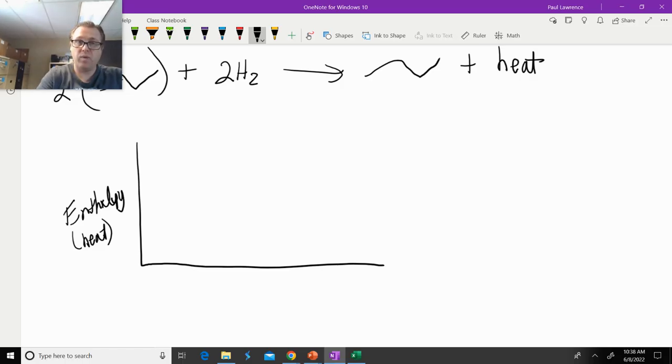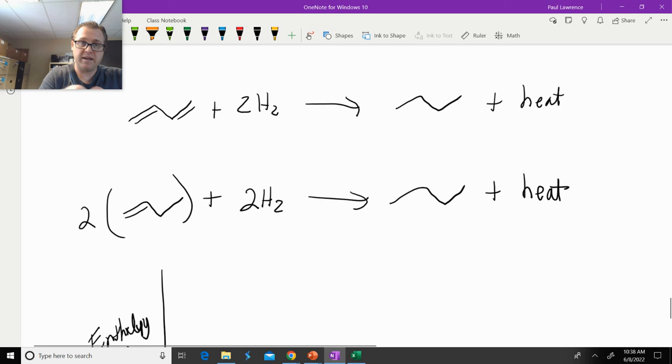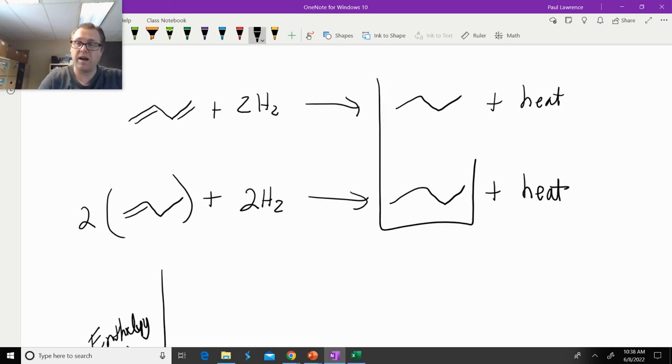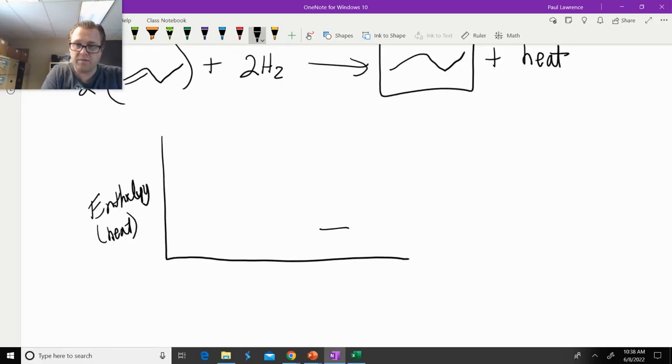And what we can see is between the two possibilities, the diene and the alkene, we both come to the same product. So I'm going to represent the product with this line right here. Now, the question is, we're going to have our starting materials here. Now, we don't know at this moment in time which one of these is the alkene and which one of those is the diene.